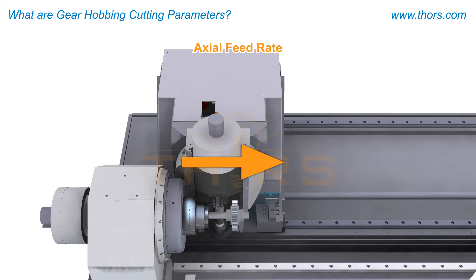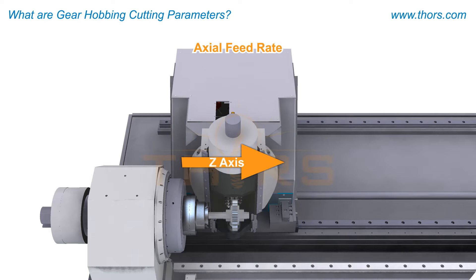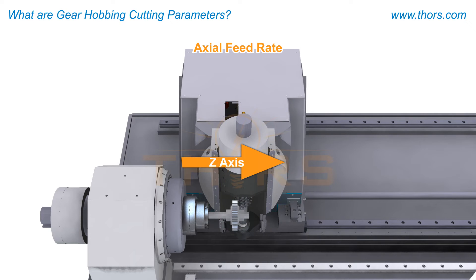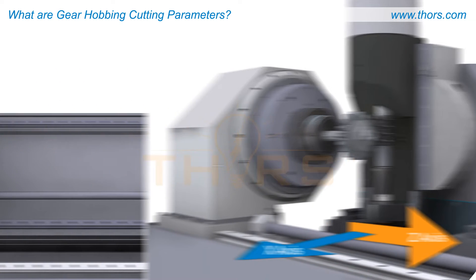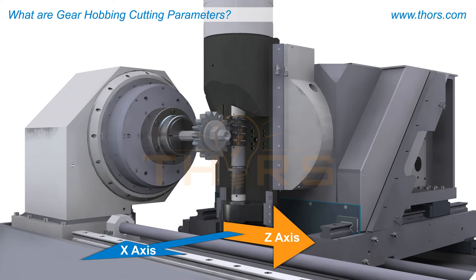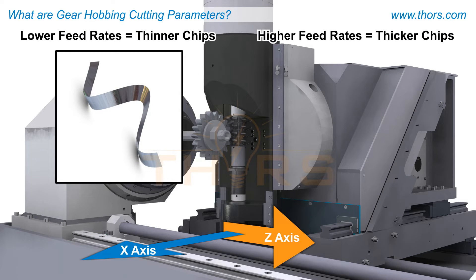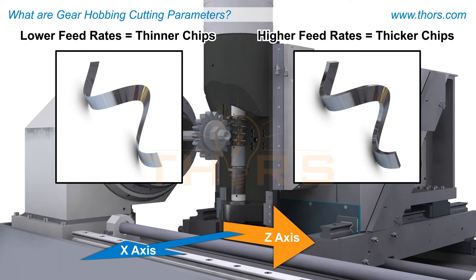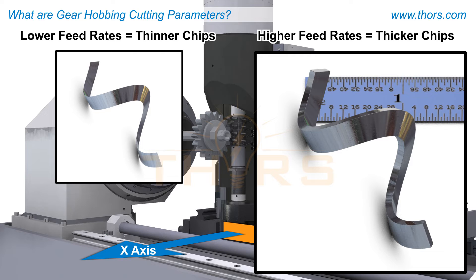The axial feed rate is the rate of linear travel, typically in the z-axis, across the length of the gear blank, also referred to as the face width. Changes to the feed rates affect the cycle time. Lower radial and axial feed rates produce thinner chips, while higher feed rates produce thicker chips. Maximum chip thickness varies based on the manufacturer and model of the gear hobbing machine selected.